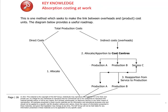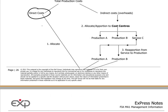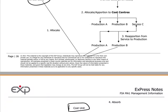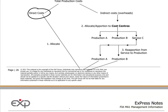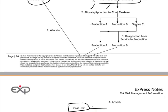Last time we were talking about the process of absorbing indirect costs or overhead costs into units of production. We looked at this schematic, this so-called road map, where the focus is not so much on direct costs because that's easy — we can attribute direct costs directly to the unit of product itself. The more complicated process is taking the indirect or overhead costs and getting them either allocated or apportioned, and ultimately reapportioned and absorbed into the cost unit.